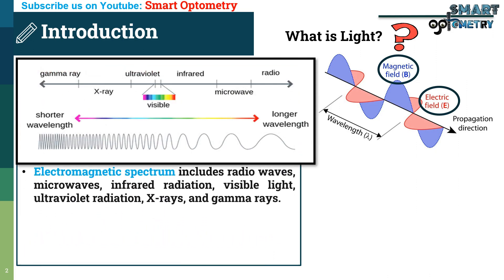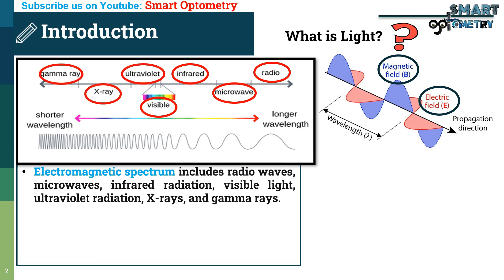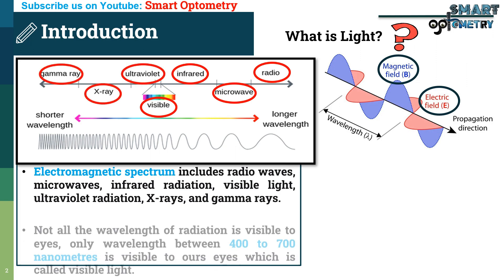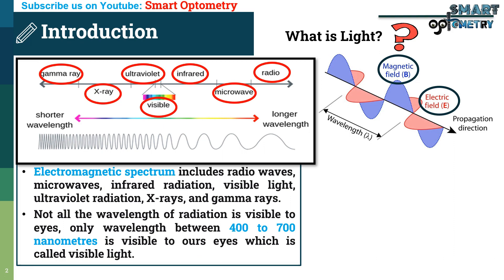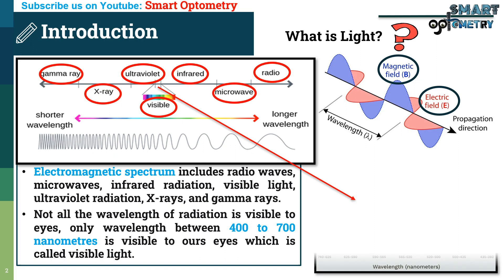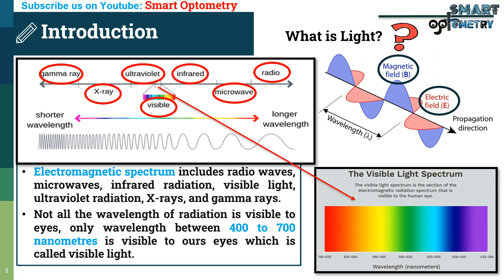The electromagnetic spectrum includes radio waves, microwaves, infrared radiation, visible light, ultraviolet radiation, X-rays, and gamma rays. Not all wavelengths of radiation are visible to human eyes. Only wavelengths between 400 to 700 nanometers are visible to our eyes, which is called visible light.